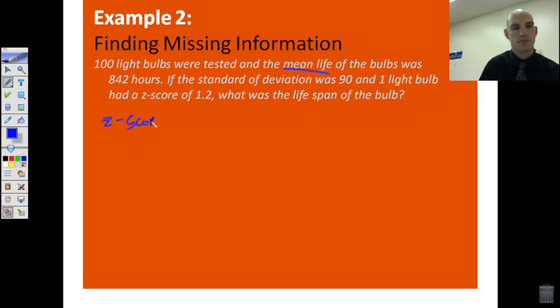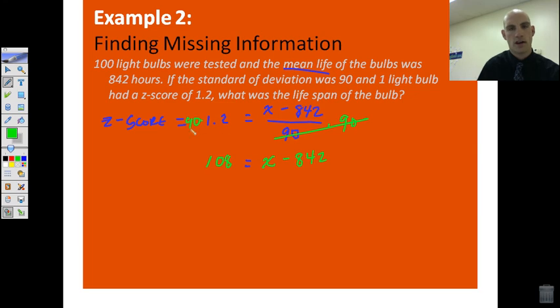Well, what we're going to do is we're going to set up the equation and fill in everything we know. The z-score equals 1.2. We know that that's really equal to the life of that bulb, which we don't know, minus the mean, 842, divided by the standard deviation, which is 90. So, look at what we have here. We have an x and we have a bunch of other numbers. So, what I need to do is I need to solve. I'm going to multiply both sides by 90 to start with, and I get 108 is equal to x minus 842. Because these go away, 90 times 1.2 is 108. Well, when I add 842, I will be able to solve for x. So, this is basic algebra. We just need to know how to set up the equation. So, x equals, and this is going to be 950.